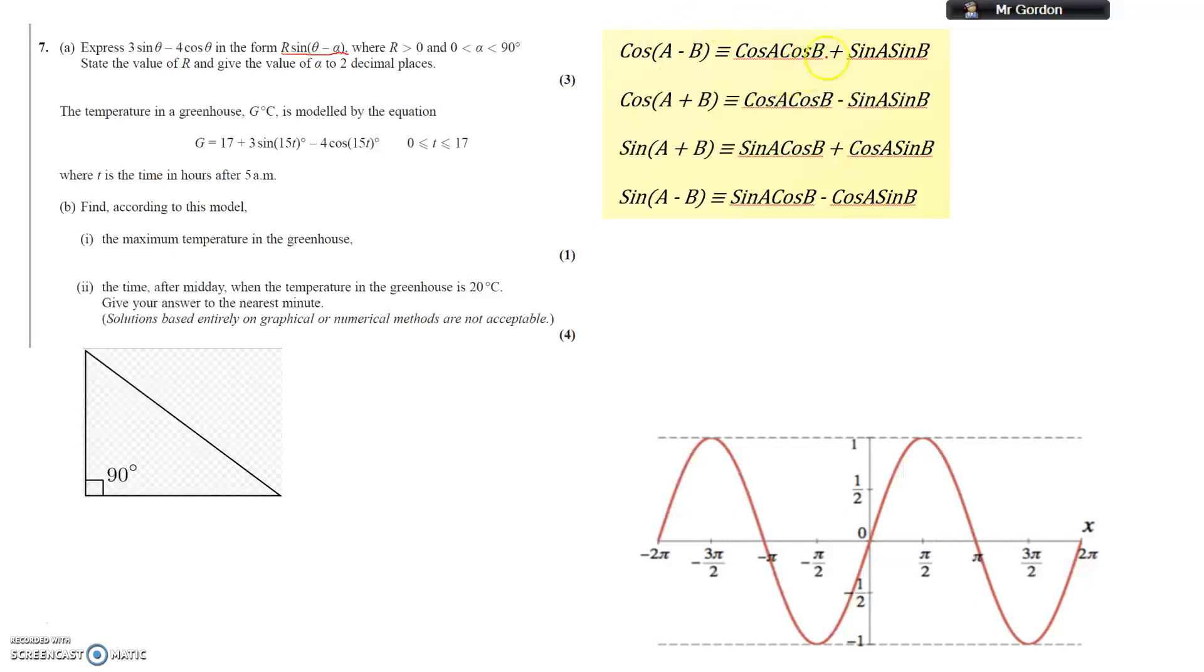Alright, so I'm going to look down these formulas here. These are the ones I've got to use for this question. The bottom one is the sine something minus something, so we are using that one. R sine, and A is now theta minus alpha, so B is now alpha. Let's fill that in and make a bit more sense. Sine theta cos alpha minus cos theta sine alpha. Alright, and let's write down underneath what we are transforming: 3 sine theta minus 4 cos theta.